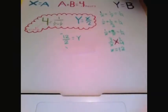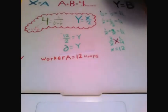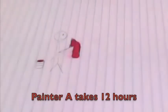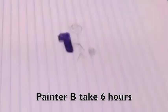Cross multiply, X equals 12. Painter A takes 12 hours and Painter B takes 6 hours.